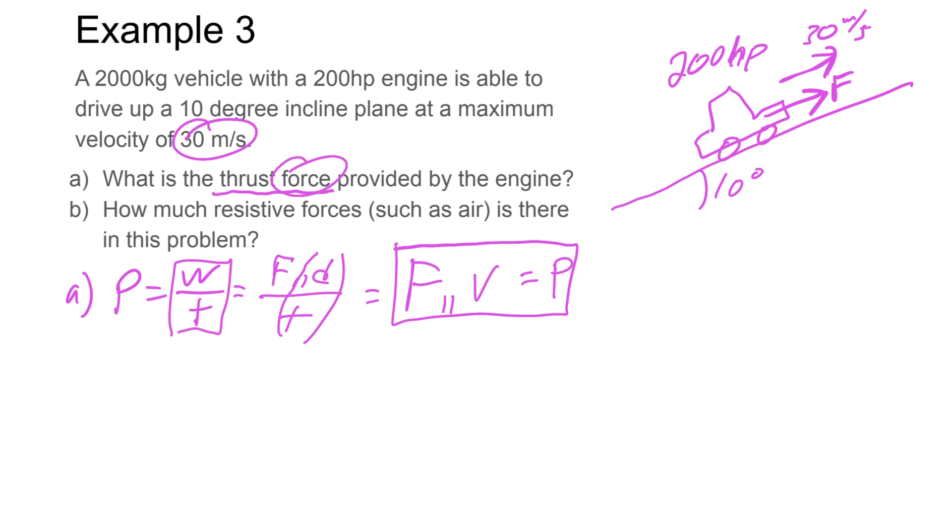That simplifies this problem dramatically. We know the power is 200 HP. Let's go ahead and convert that into watts. So 200 horsepower times 746 watts per horsepower, that gives us a total power of 149,200 watts. And then that's going to be equal to force times velocity. In this case, our velocity we said was 30 meters per second.